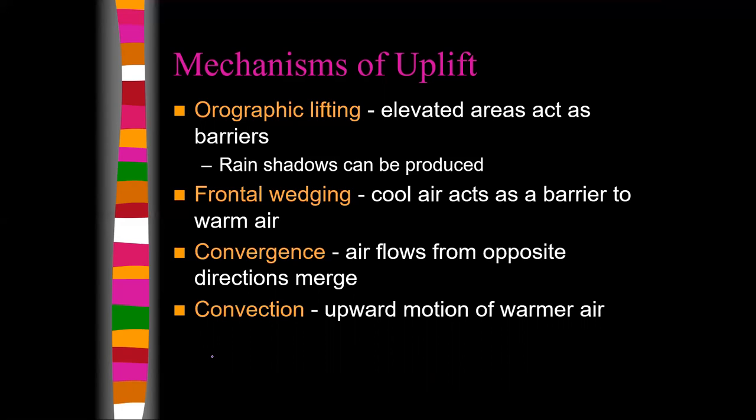Convergence is when air flows in from opposite directions and converges. When air converges, the only place it has to go is up, and rising air is unstable air. Convection is the upward motion of warmer air — warm air rises, cold air sinks. Rising air is unstable, sinking air is stable.